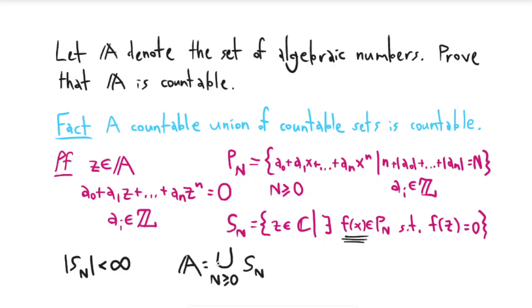And so this equality is true. But now notice that this is a countable union of countable sets. In fact, each of the S_N's is a finite set. And so that means that the algebraic numbers are countable.